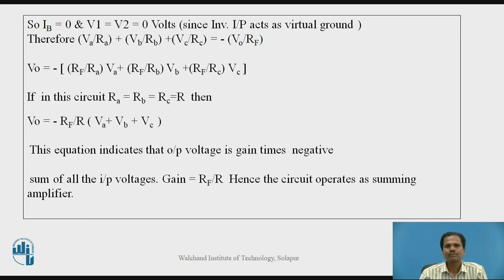If the gain of this amplifier, R-F/R, is set to 1, then the output voltage equation becomes V-O equals minus (V-A plus V-B plus V-C). The circuit then acts as an adder circuit in which the output voltage is the addition of the three input voltages.